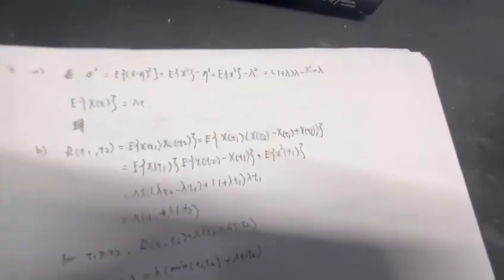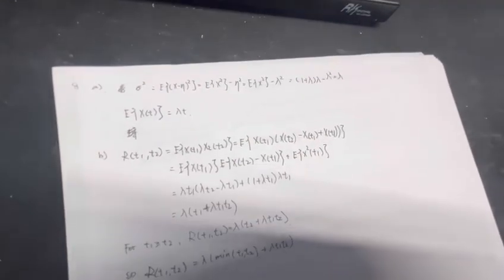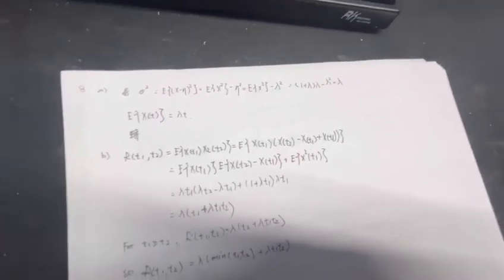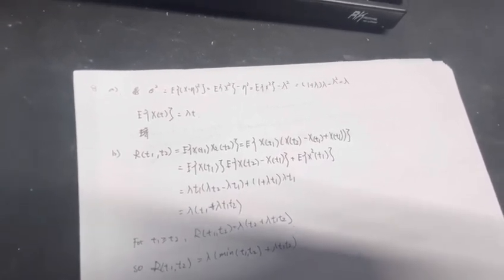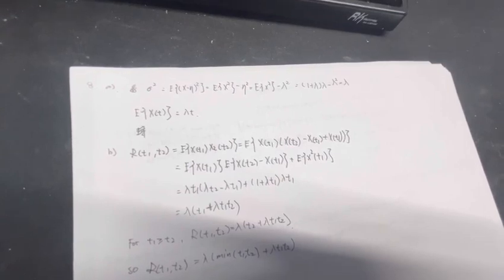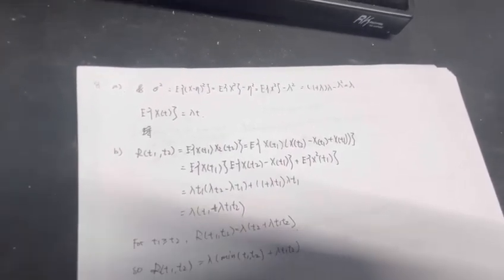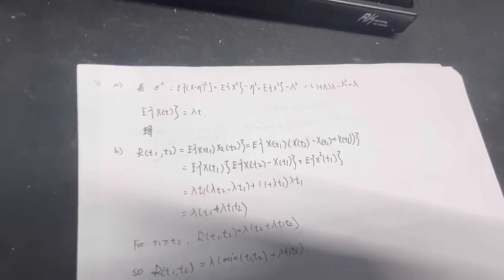Since we learned the Poisson function before, we already have that sigma squared equals the expected value of (X - mu) squared, which equals E[X²] - mu².